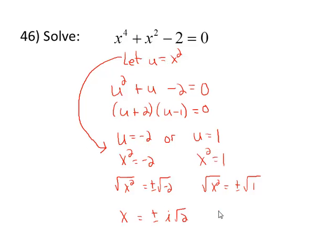The square root of -2 is ±i√2. Here we have the square root of 1, which is 1, so ±1. And my solution set: {-i√2, i√2, -1, 1}.